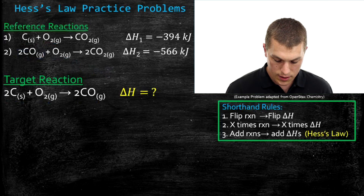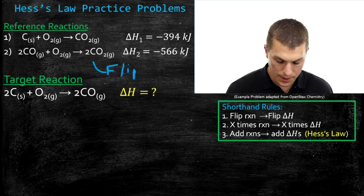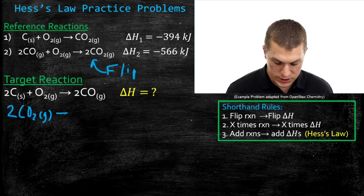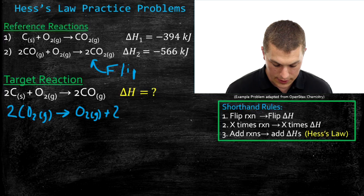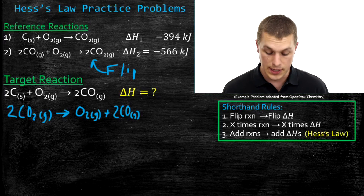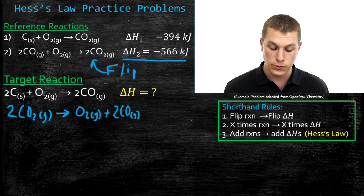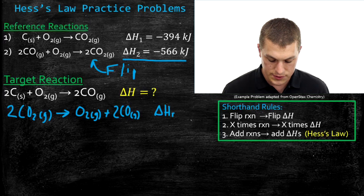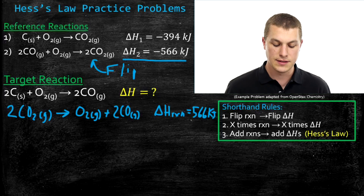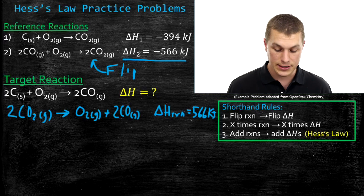We're going to flip reaction two and rewrite it. When we flip it, we put the products on the left: two CO2 gas splits into one O2 gas plus two carbon monoxide gas. The enthalpy just flips sign — it was negative 566, so now it's positive 566. Now our carbon monoxide is on the correct side.